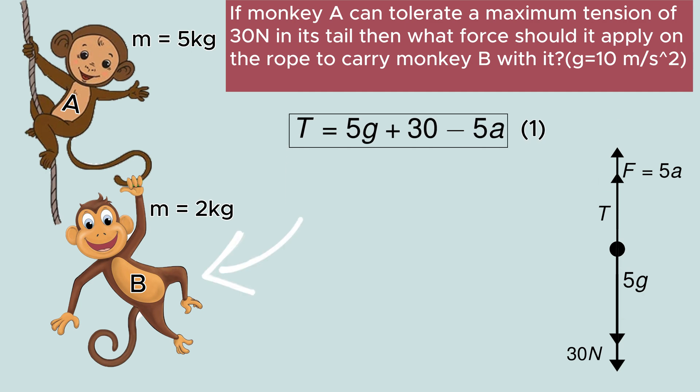Now let us decide our system as monkey B. We now have to identify forces on monkey B and draw a free body diagram. After representing monkey B as a dot, we have to find force vectors in the upward and the downward direction. Clearly weight 2g is acting downwards and tension 30 newtons and force 2A is acting upwards.